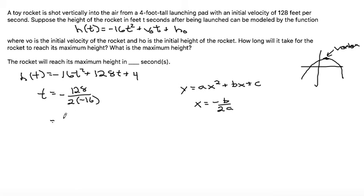If we multiply that out, we have a negative and another negative, so that makes a positive, and that would be 128 divided by 2 times 16 is 32. And 128 divided by 32 is 4.